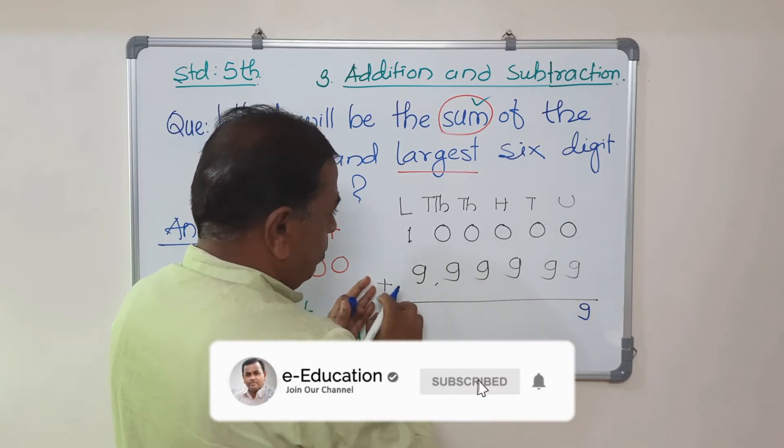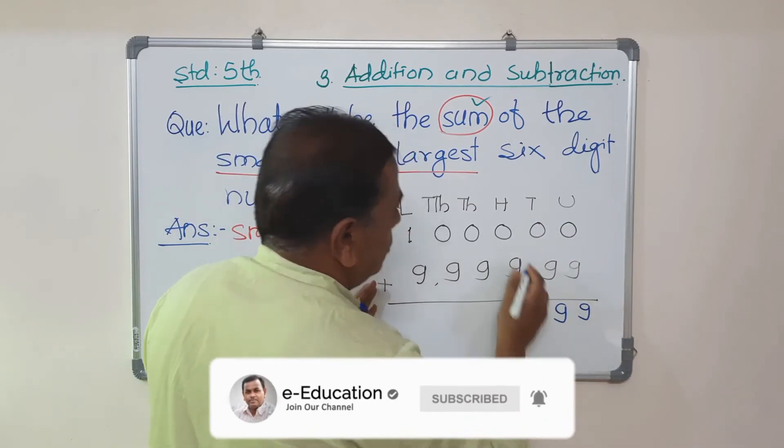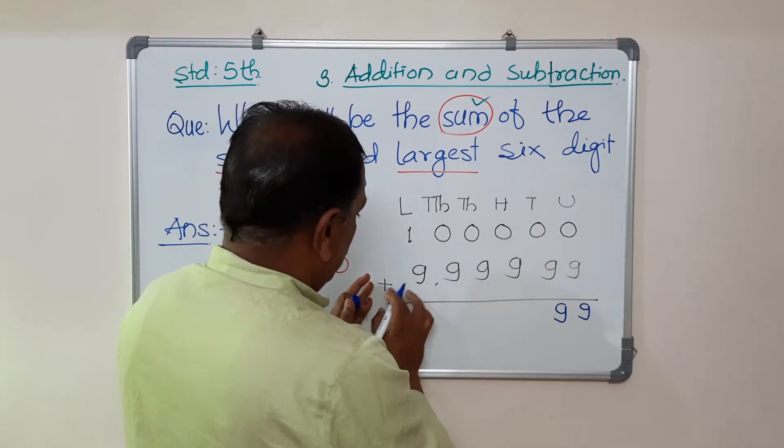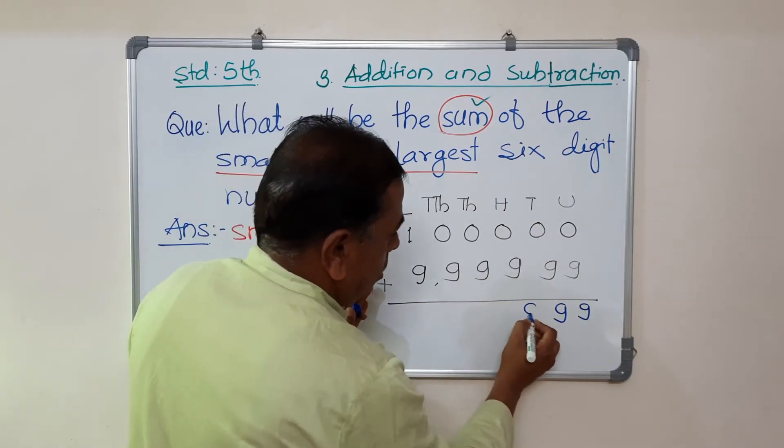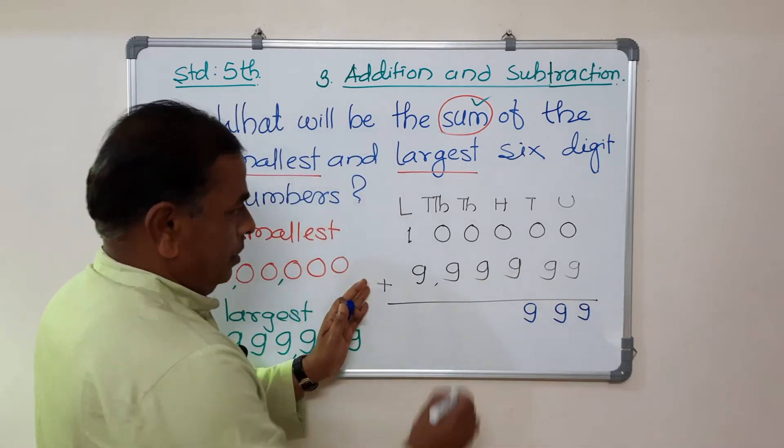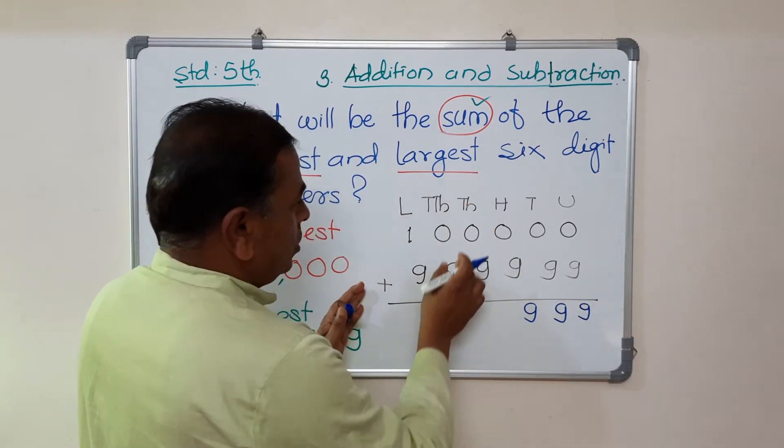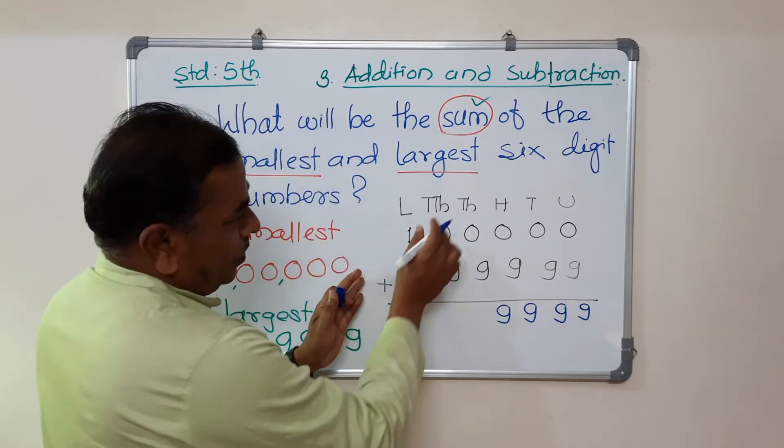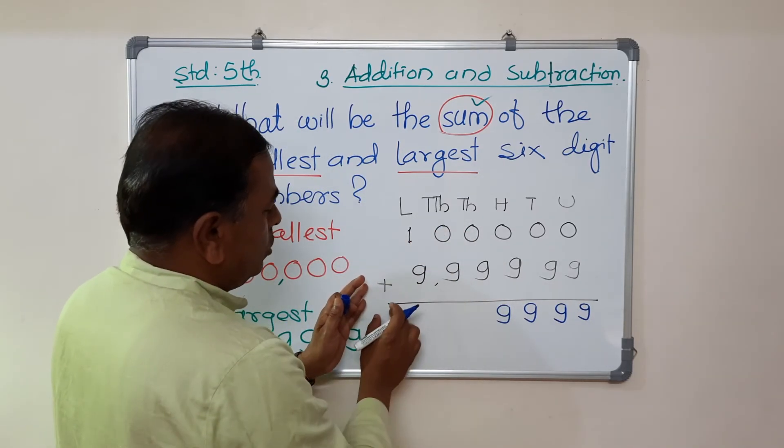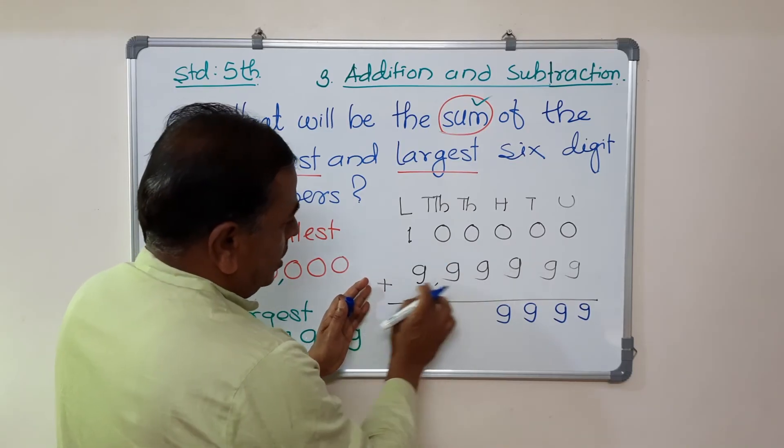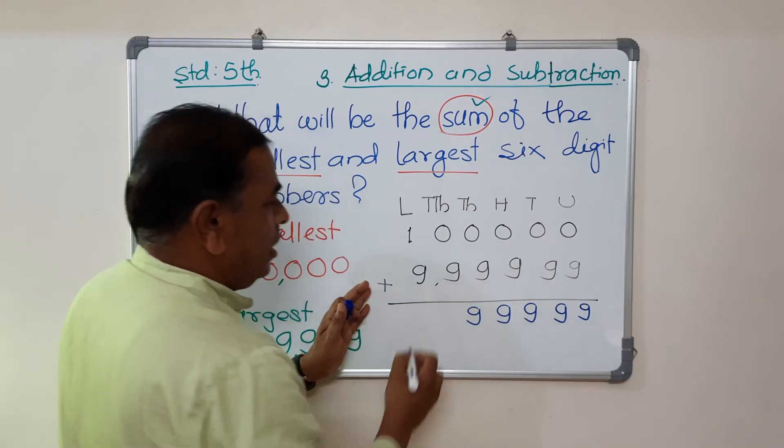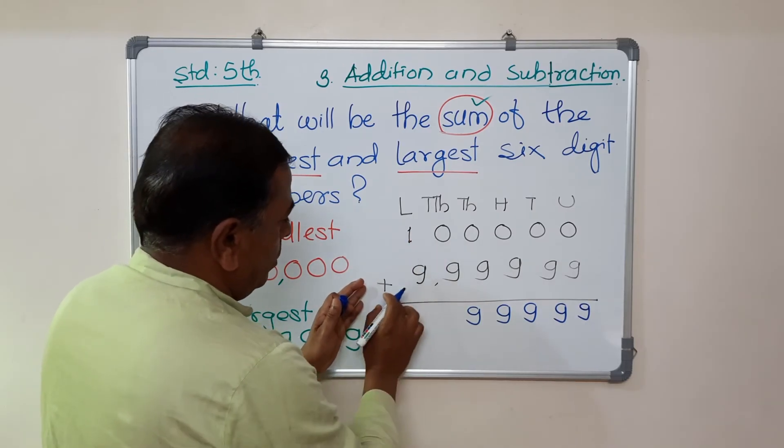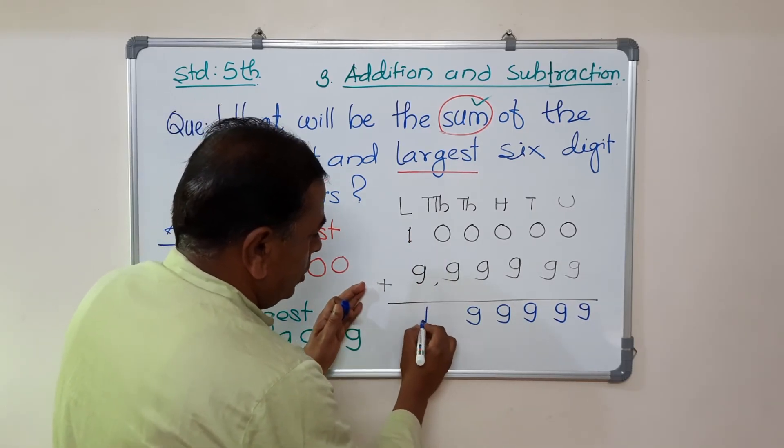0 plus 9, 9. Now from 100 column, 0 plus 9 is equal to 9. 1000 column, 0 plus 9, 9. 10,000 column, 0 plus 9, 9. And from lakh, 1 plus 9 is equal to 10.